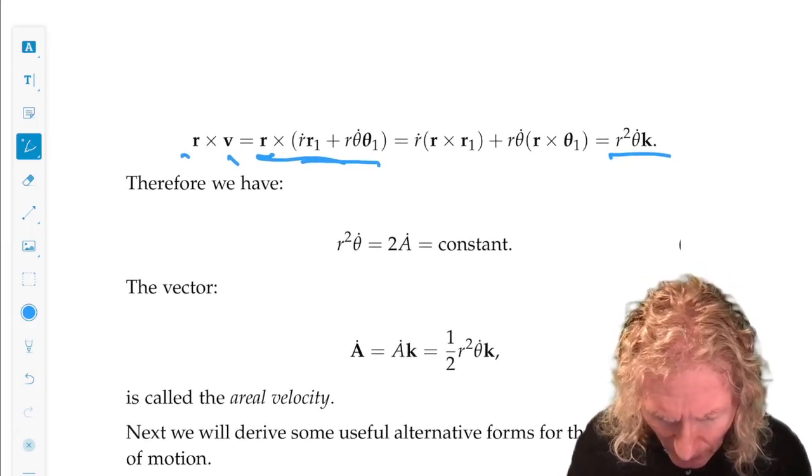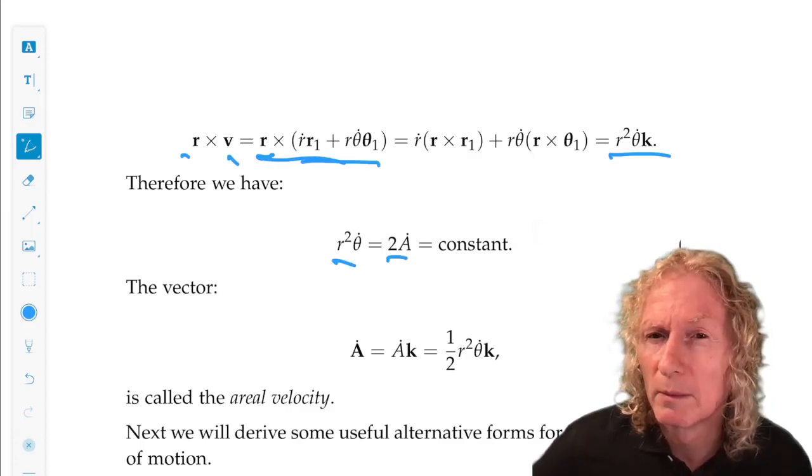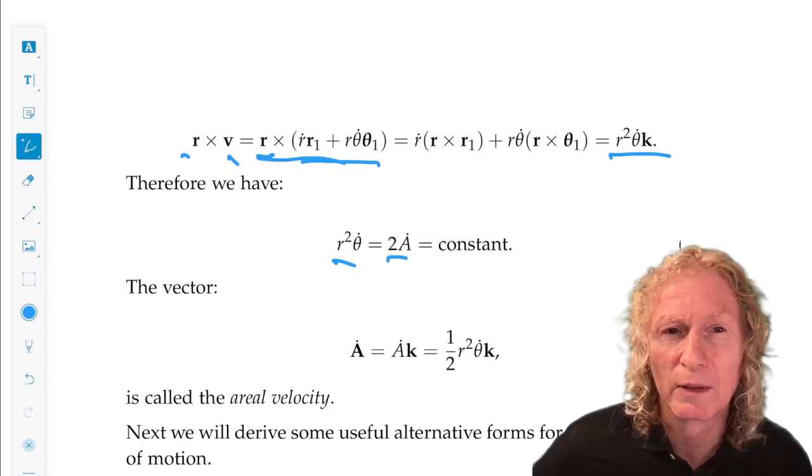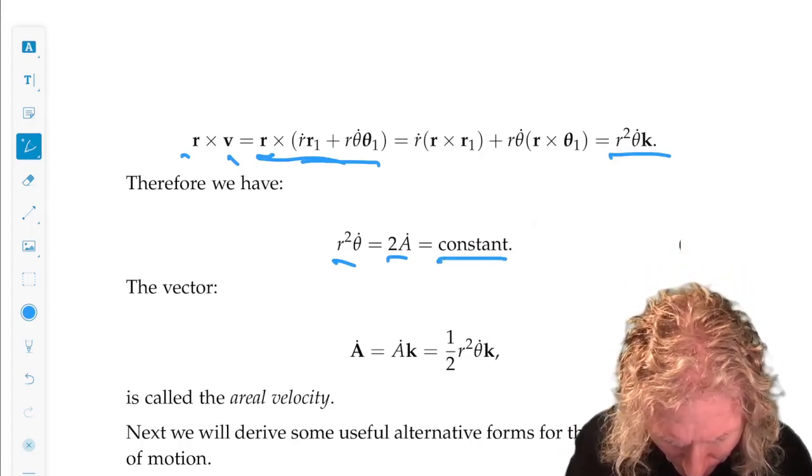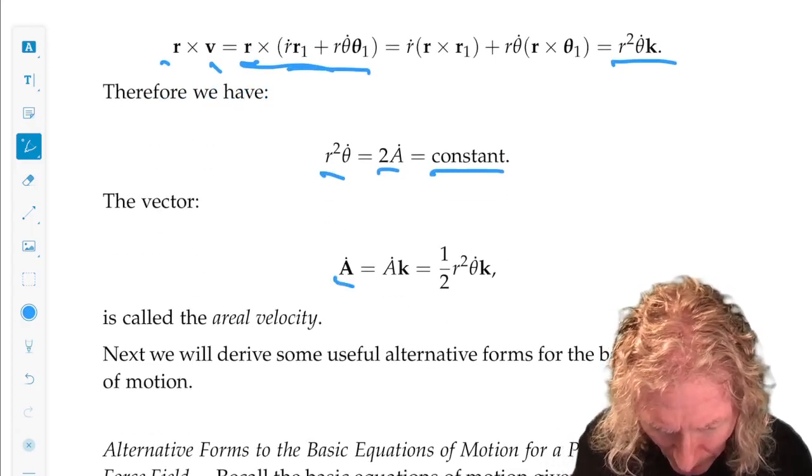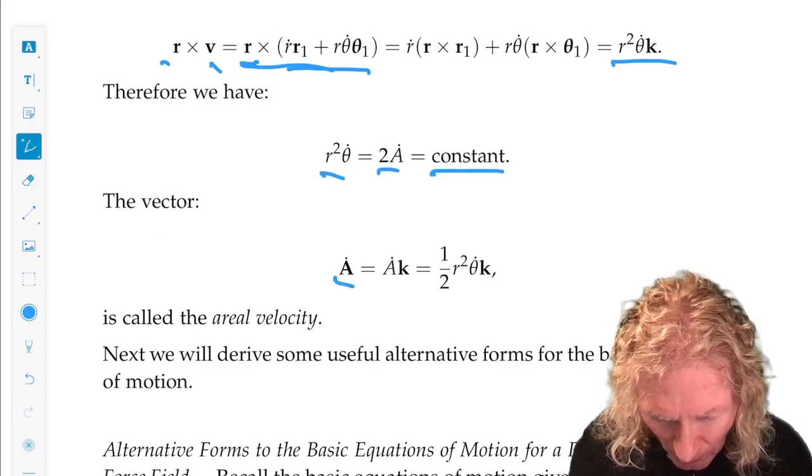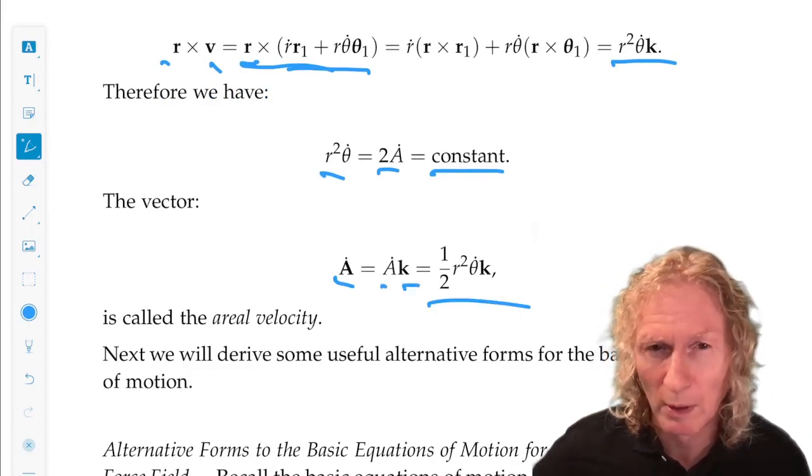So we see that r²θ̇ = 2Ȧ, which is a constant. Therefore, the vector Ȧ, which is magnitude Ȧ times k̂, equals ½r²θ̇ multiplied by k̂.